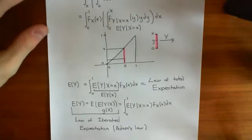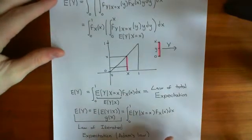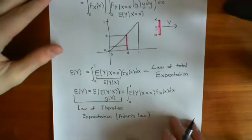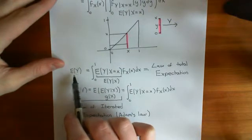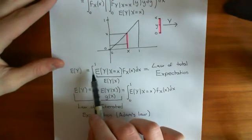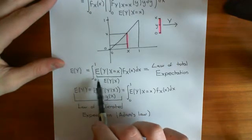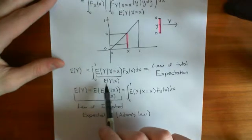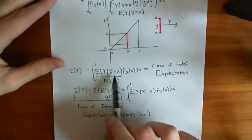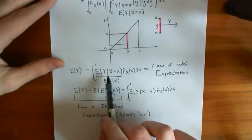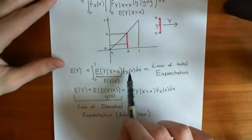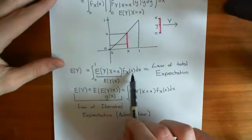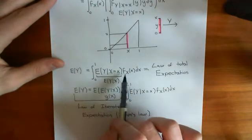Welcome to part 5 of this video on how to use the law of total expectation — a practical example. We have agreed that the expected value of our random variable Y, the average point at which you will make the second break, is equal to the integral from 0 to 1 over all x values — all points at which you can make the first break — times the expected value of Y given X equals little x, times the probability density function that the first break was at little x. So now we need to calculate these two things and then do the integral.